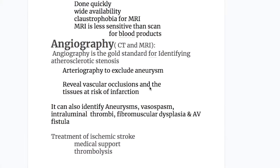Angiography is the gold standard for identifying atherosclerotic stenosis. It excludes aneurysms, reveals vascular occlusions and tissues at risk of infarction. Angiography can also identify vasospasm, intraluminal thrombi, fibromuscular dysplasia, and AV fistula.